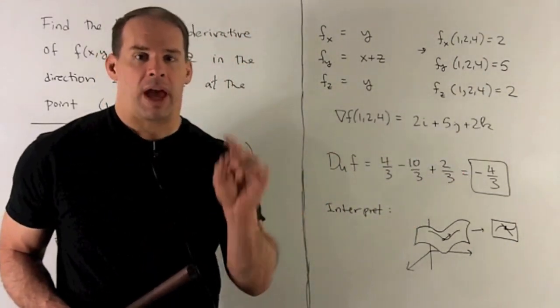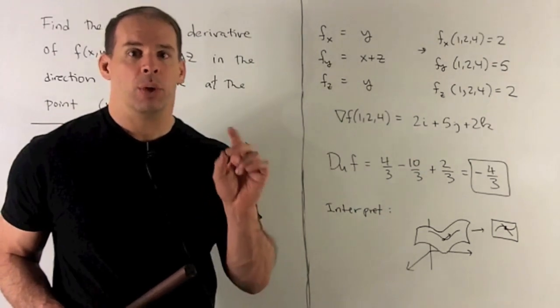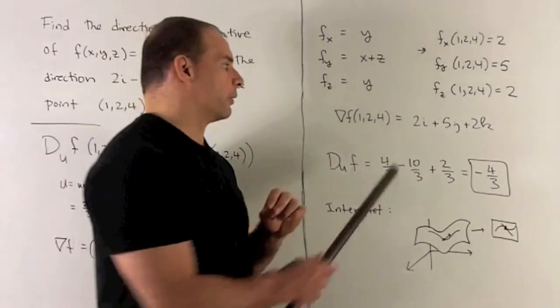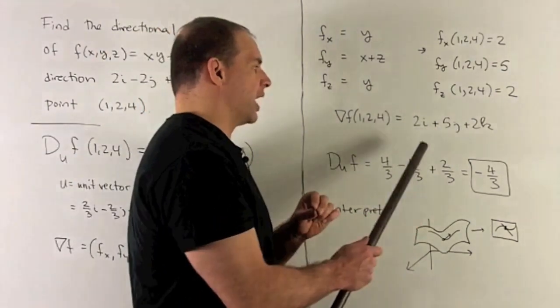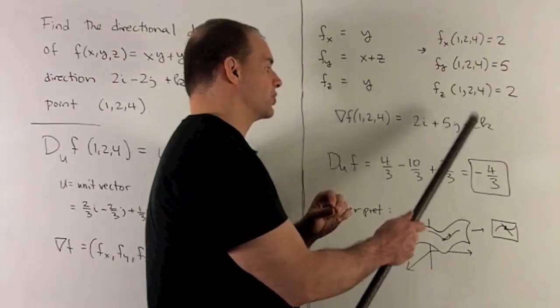So our gradient at our point is going to be (2, 5, 2), or we can write it in i, j, k notation as 2i plus 5j plus 2k.